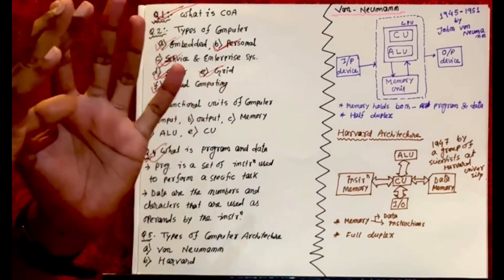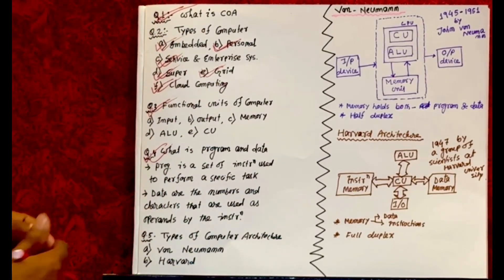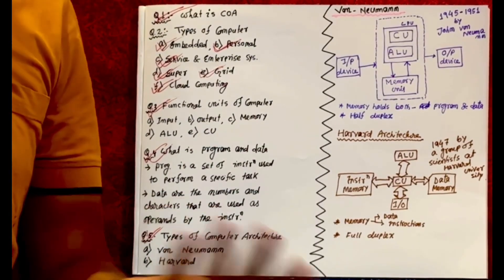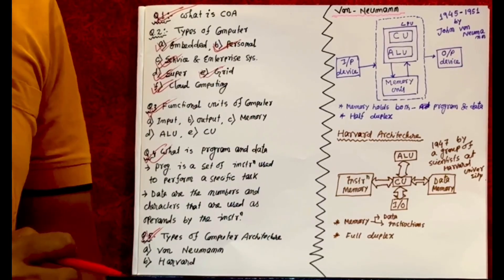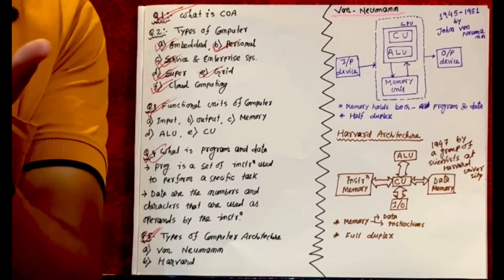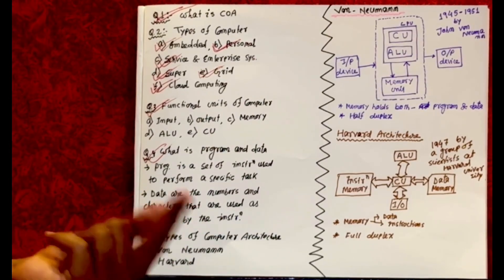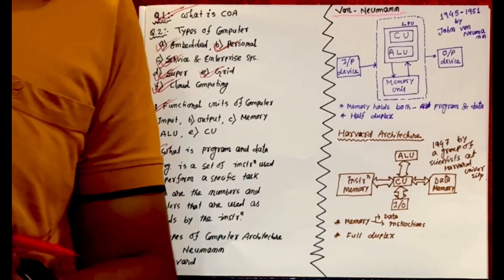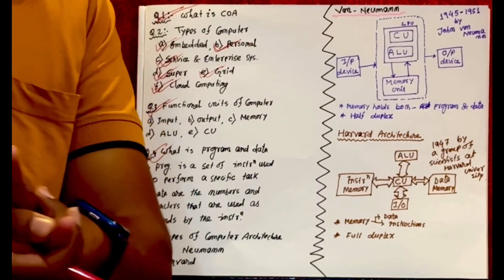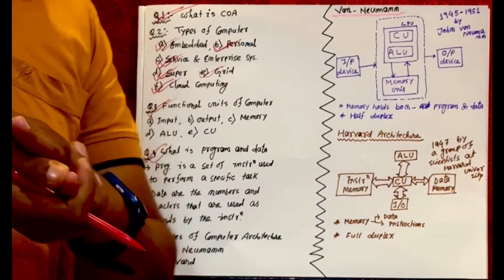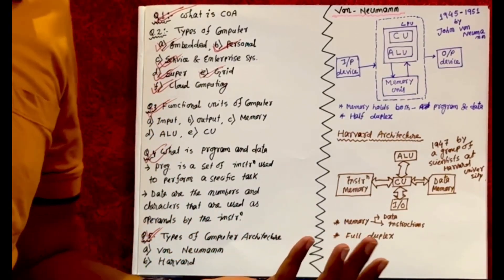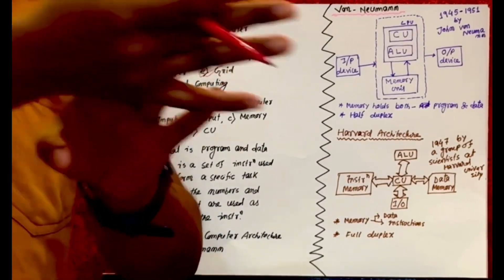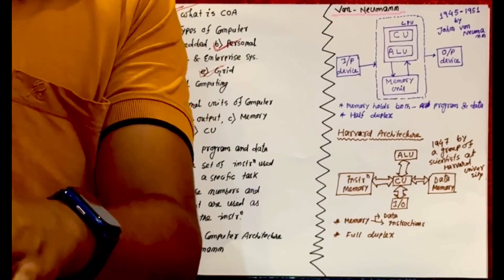The next question is: what are the types of computer architecture? There are two major types we should know — number one is Von Neumann architecture and number two is Harvard architecture. Both architectures have their own advantages and disadvantages, and both are still in use today. It's not that one is outdated — it depends on the application and system which architecture you will use.